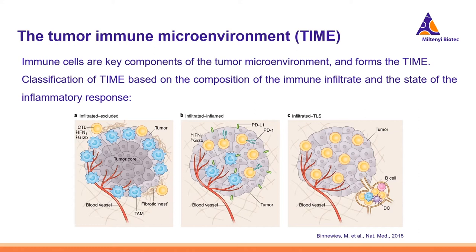Even by just looking at all the involved immune cells composing the specific tumor immune environment, it becomes clear that the characterization of all the cell types needs many proteins to be analyzed. One important proportion of the cell types involved are of course the immune cells, as they provide us with important information on prognosis and therapy of the individual cancer. The composition and spatial distribution of these cells define the tumor immune microenvironment. It can be classified based on the composition and the infiltrating cells as well as the state of inflammatory response.